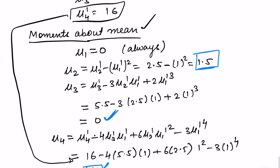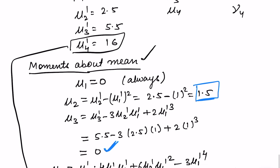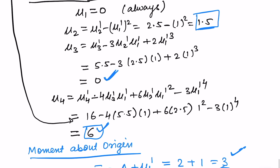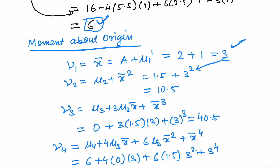This completes the whole first question, which required finding the moments about the mean and about the origin when the moments about the point x equals 2 are given. Let us move on and solve another question involving these relations.